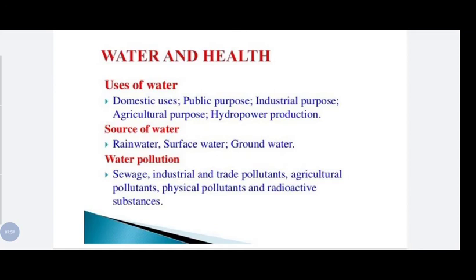What are the sources of water? Rainwater, surface water and groundwater. Water pollution comes from sewage, industrial and trade pollutants, agricultural pollutants, physical pollutants and radioactive substances — all of which pollute the water.